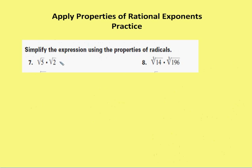Next set of problems: simplify the expression using the properties of radicals. I'm going to use the product property of radicals, which says that the square root of a times the square root of b is the square root of a times b. So the square root of 5 times 2 is the square root of 10. Remember, if you're going to multiply these two values, the index and the power have to be the same — then you just multiply the radicands together.